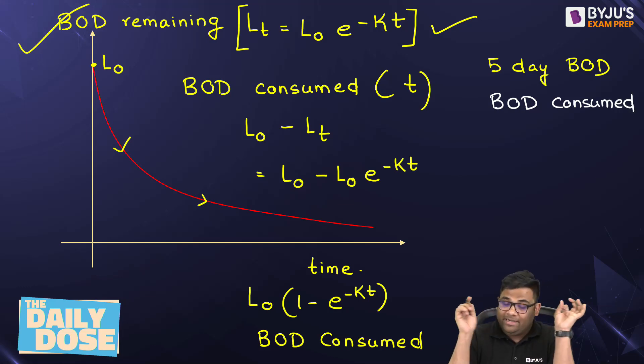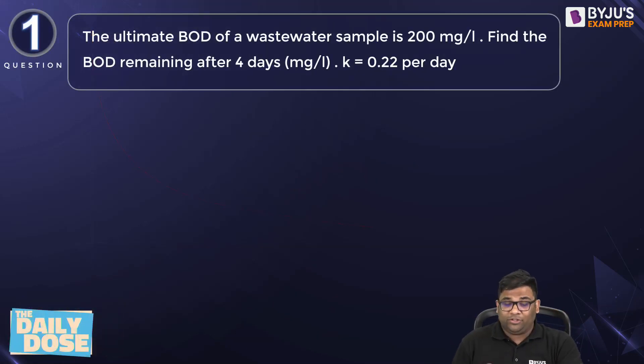So when they write BOD remaining, this equation. When they write BOD consumed, this equation. When they write 5 day BOD or 6 day BOD or 3 day BOD, then this equation. Now I have given 2 questions.